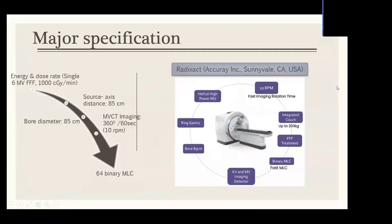The major specifications of the system: the RadExact 9X has a single 6MV flattened beam capable of delivering 1000 cGy per minute. In terms of geometric setup, it has an SSD of 85 cm along with a bore diameter of 85 cm. The system is equipped with MVCT for IGRT applications along with helical CT as an add-on option, and features a unique 64 binary MLC.